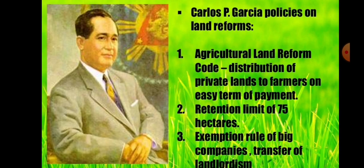Under Carlos Garcia or Diosdado Macapagal, the Agricultural Land Reform Code was enacted — it provided distribution of private lands to farmers on easy terms of payment, a retention limit of 75%, and an exception rule for big companies regarding the transfer of landlordism. As each president came, new provisions on agrarian and land reform were introduced, indicating that the problem was never truly addressed and farmers were never given their proper rights.